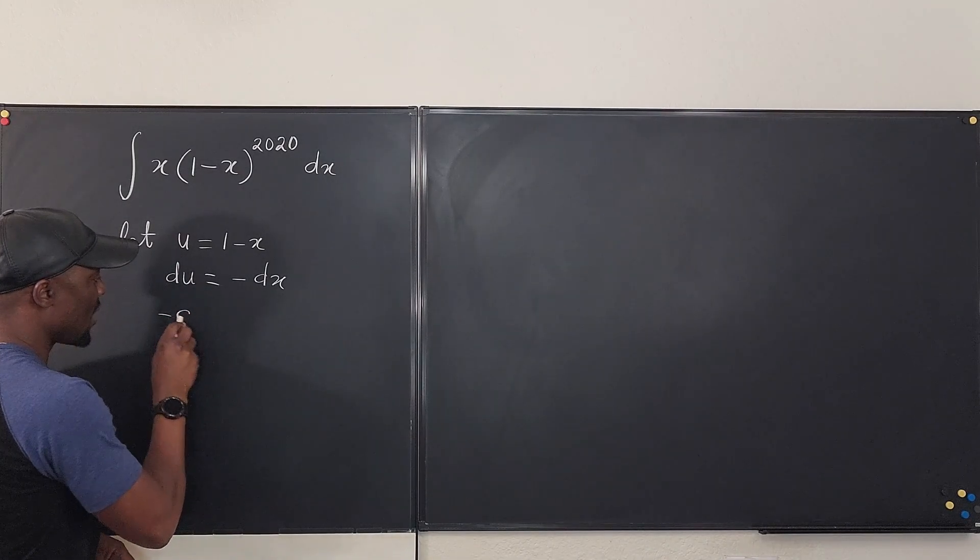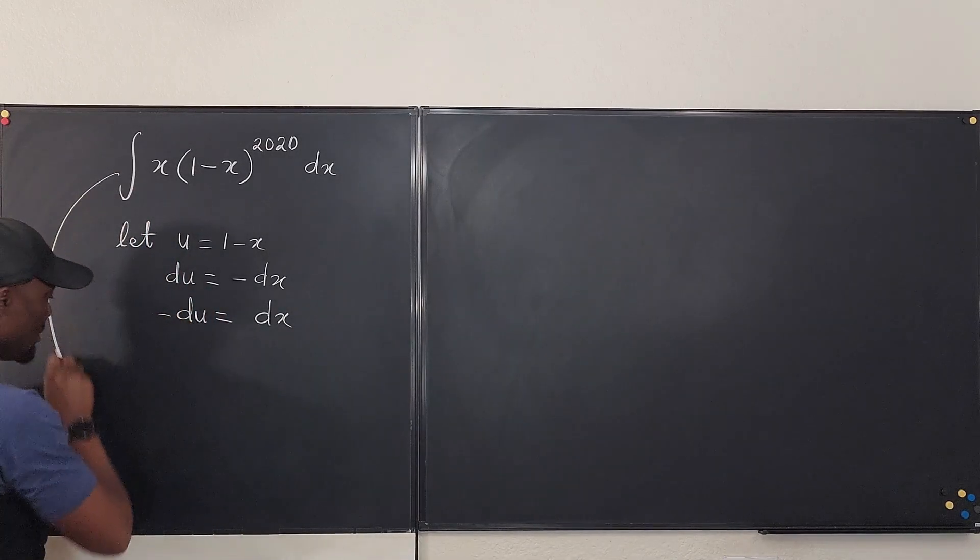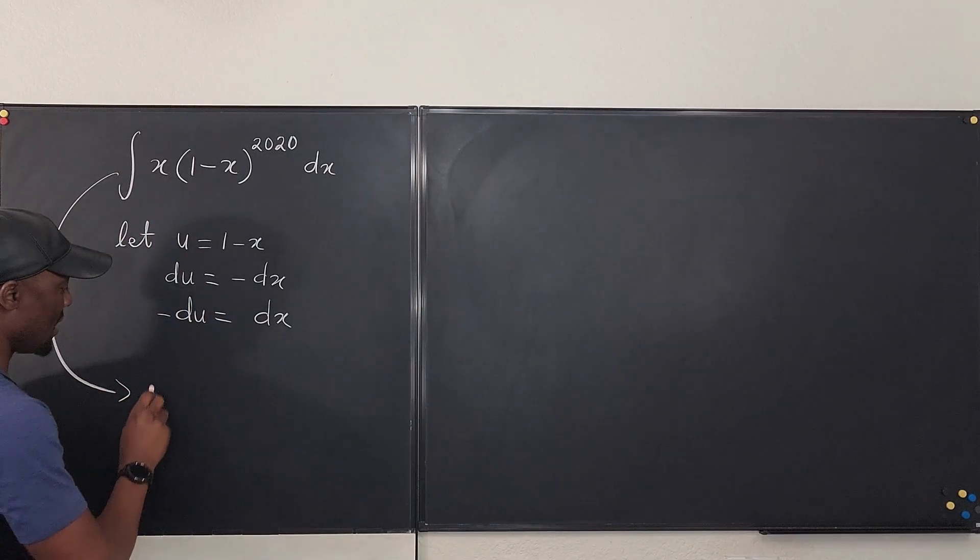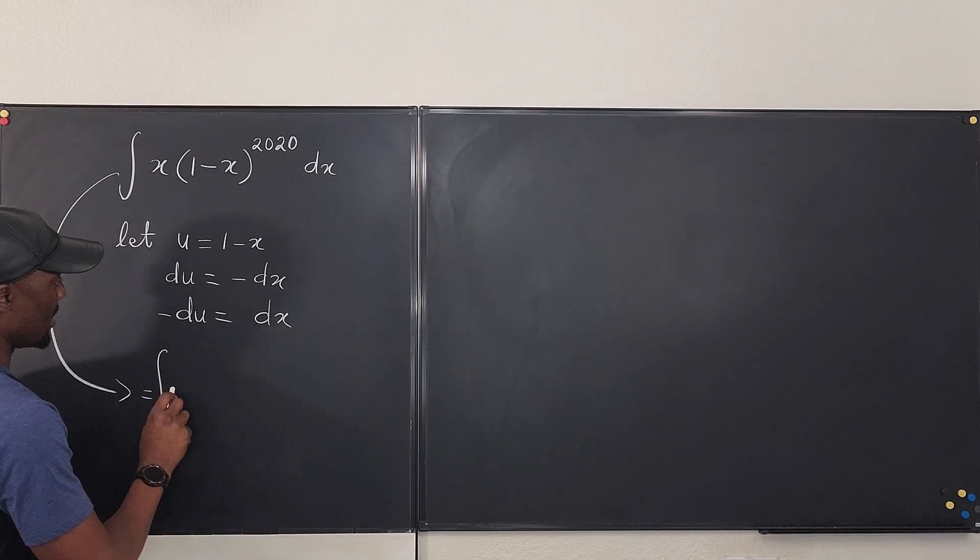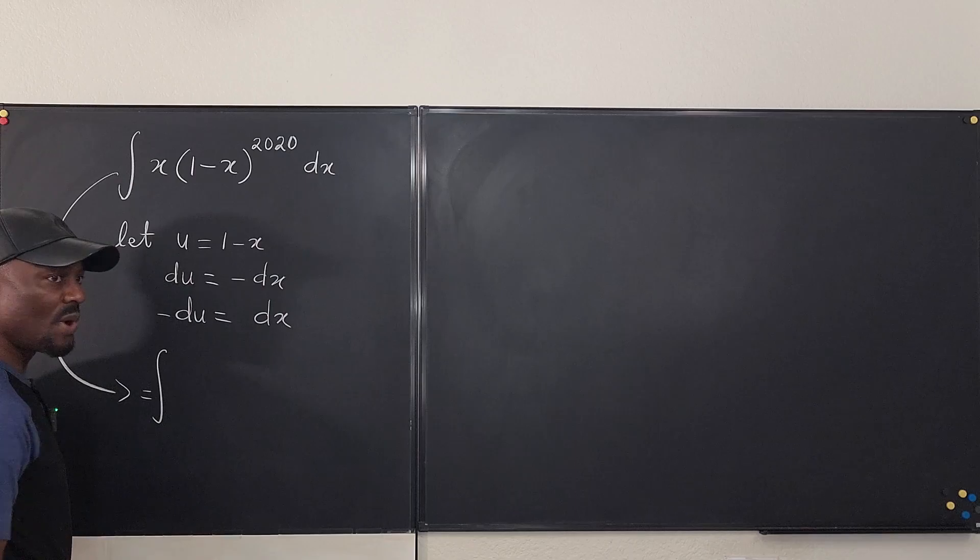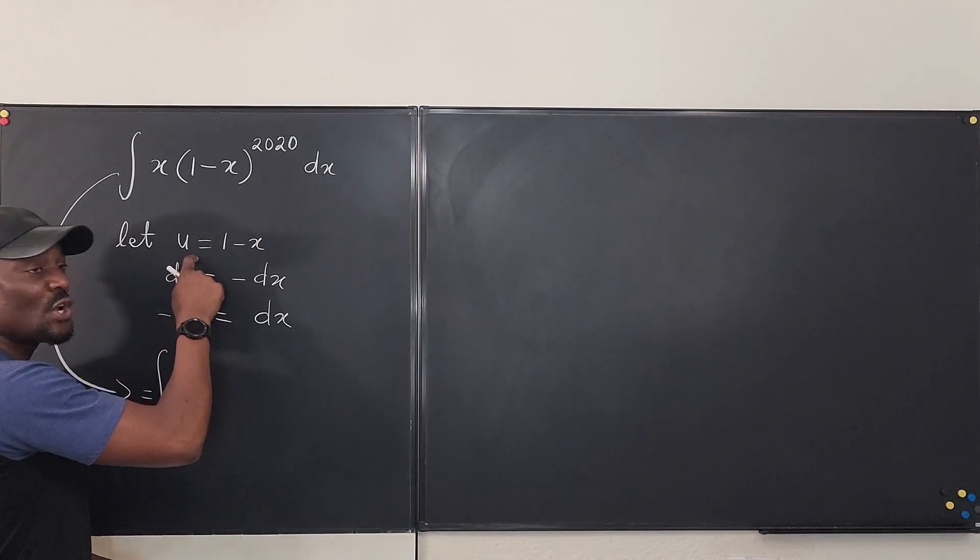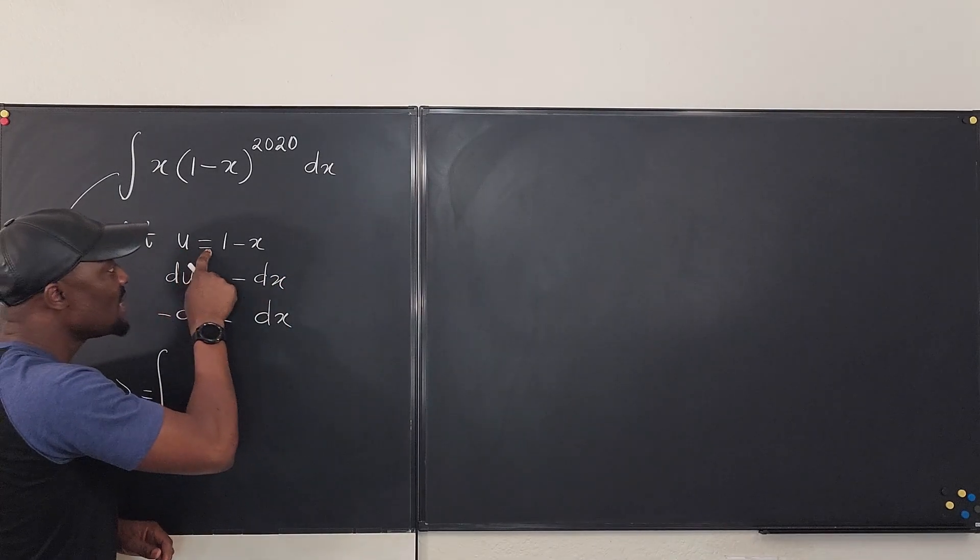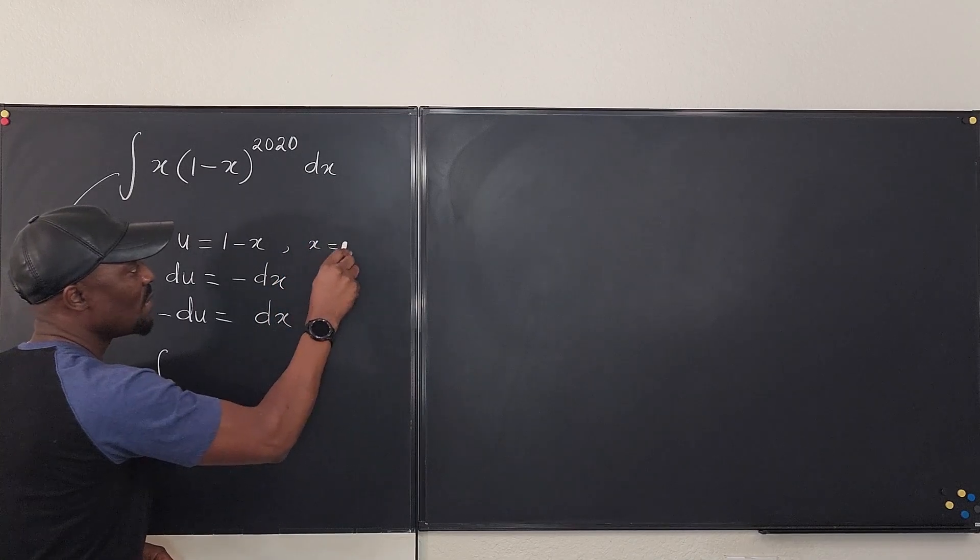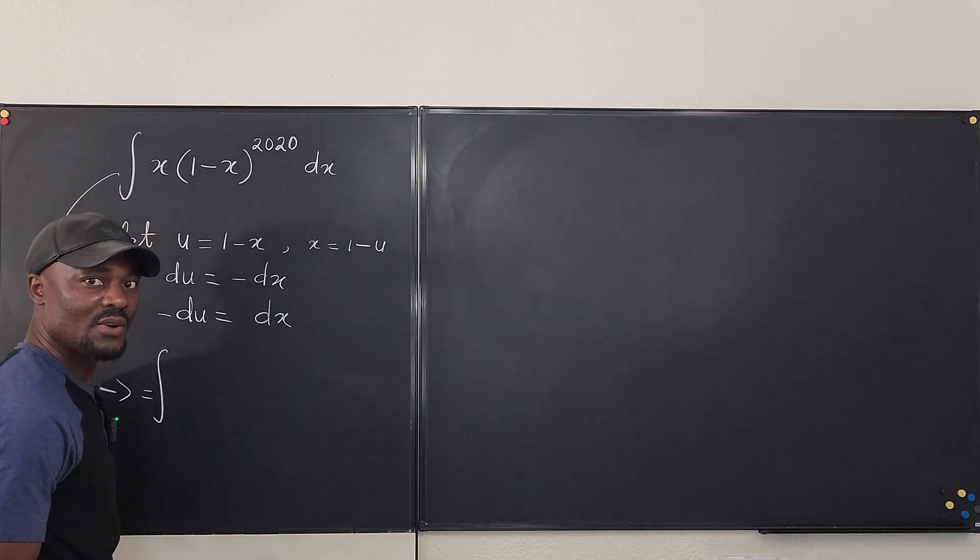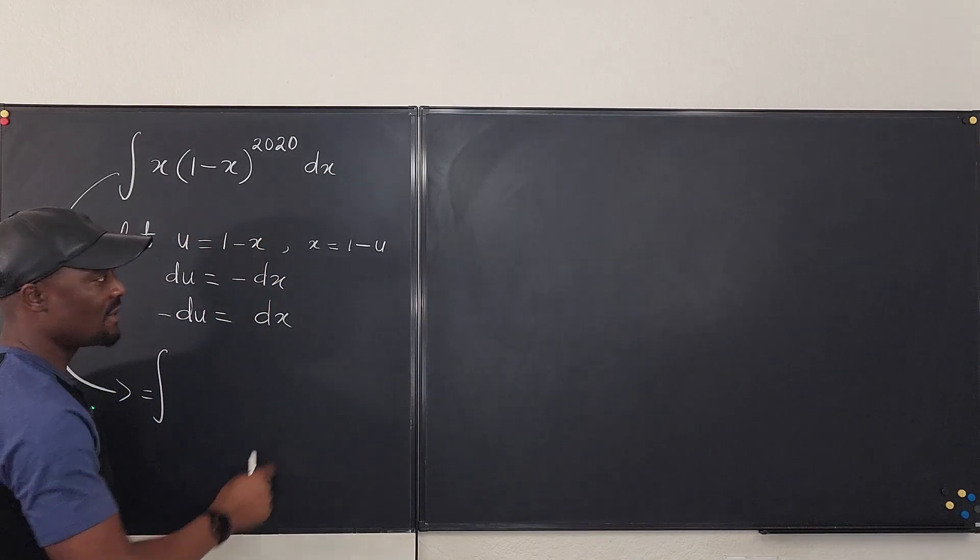And that means that the original problem we had will become the integral of - oh what will x be? We don't know what x is, we don't want to write x because we've changed everything into du. So we have to go back here and say if u is equal to 1 minus x, what would x be? Well x will be 1 minus u - that's simple algebra.